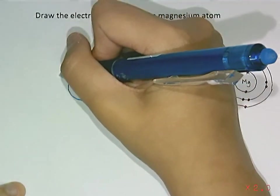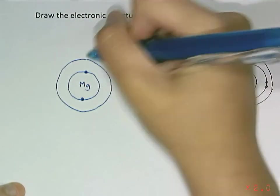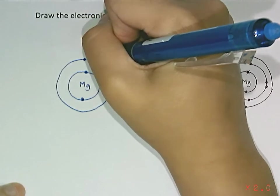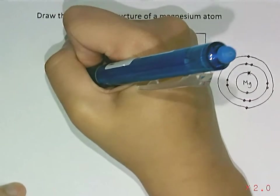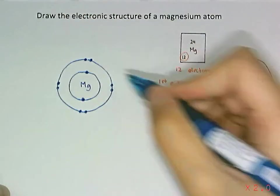So, for the second, we're going to use up all 8 spaces in the second electron shell. And then, here we have 10 already.